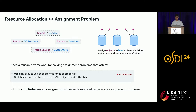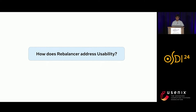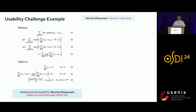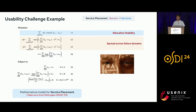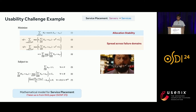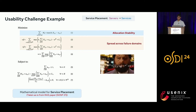Let's start with usability. To understand and appreciate the usability gap, let's look at a real example from the service placement problem. This is the mathematical model of the service placement problem, and as you can see, it is very difficult to understand or reason about. The first highlighted goal is about allocation stability, and the second is about spread across failure domains. It is easy to see that this model is very hard to write, to debug, and to reuse. What we need is a much simpler interface that can be understood easily by system practitioners.